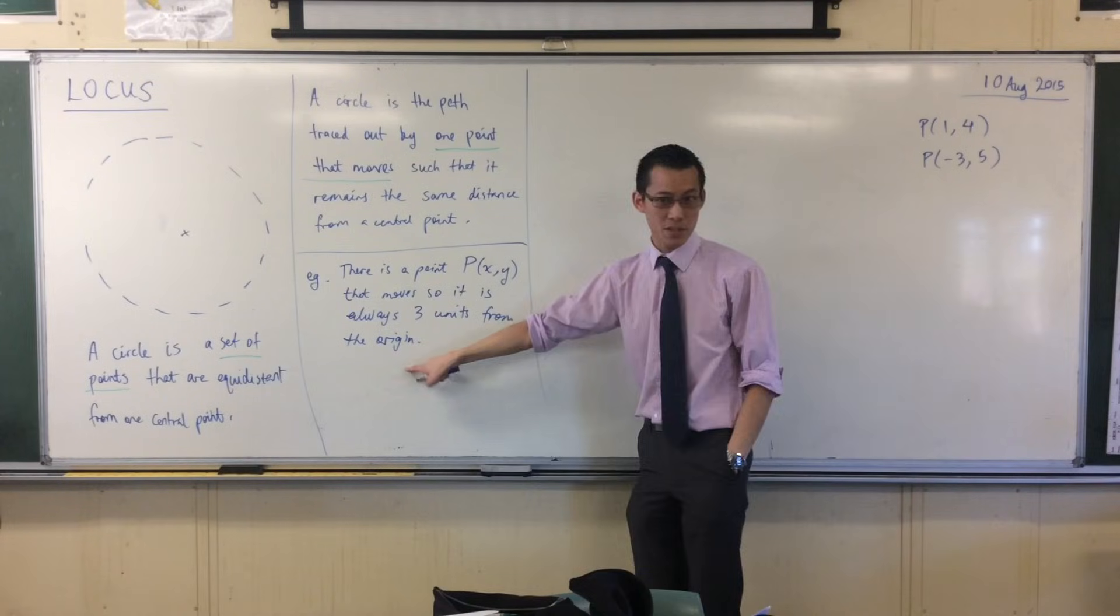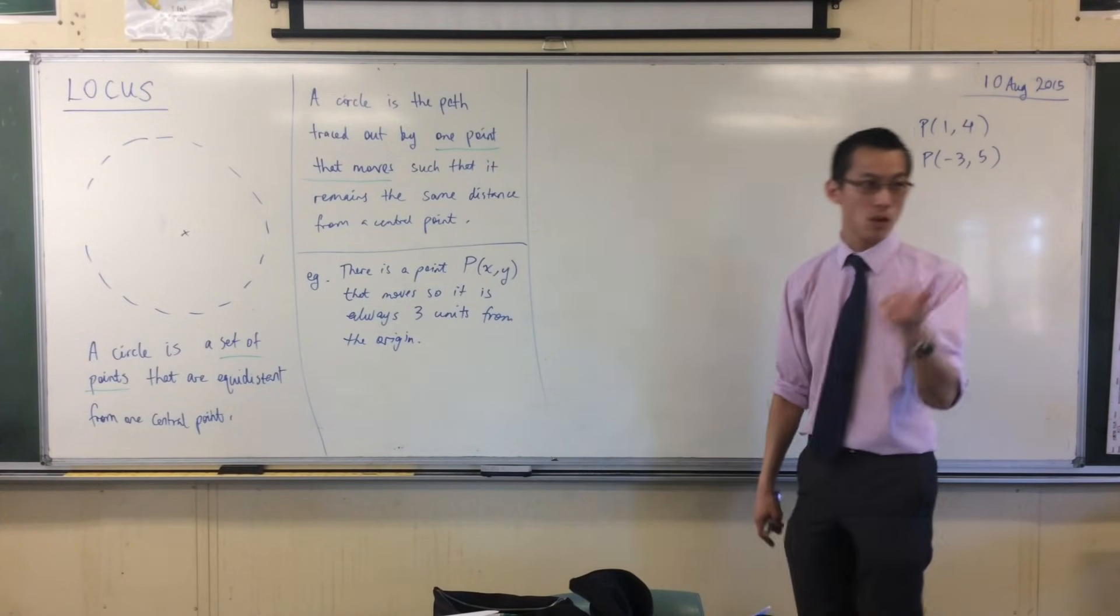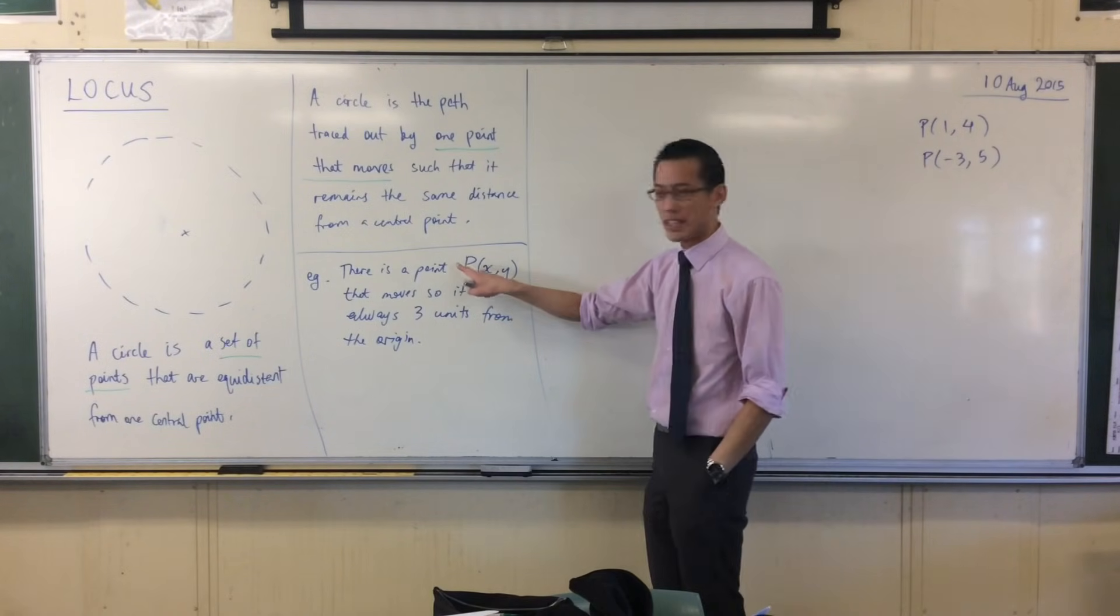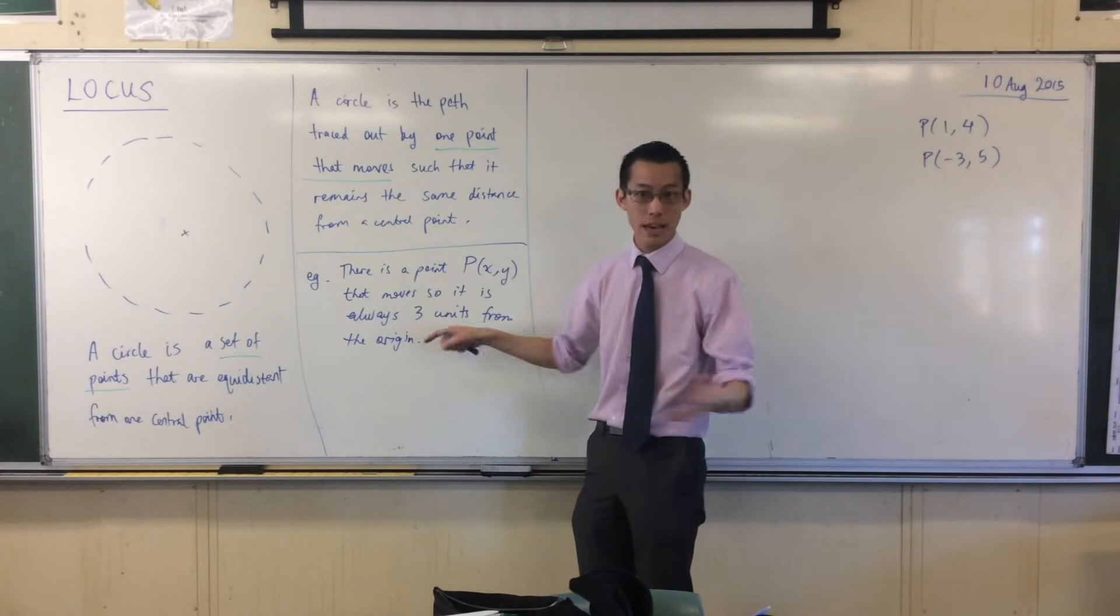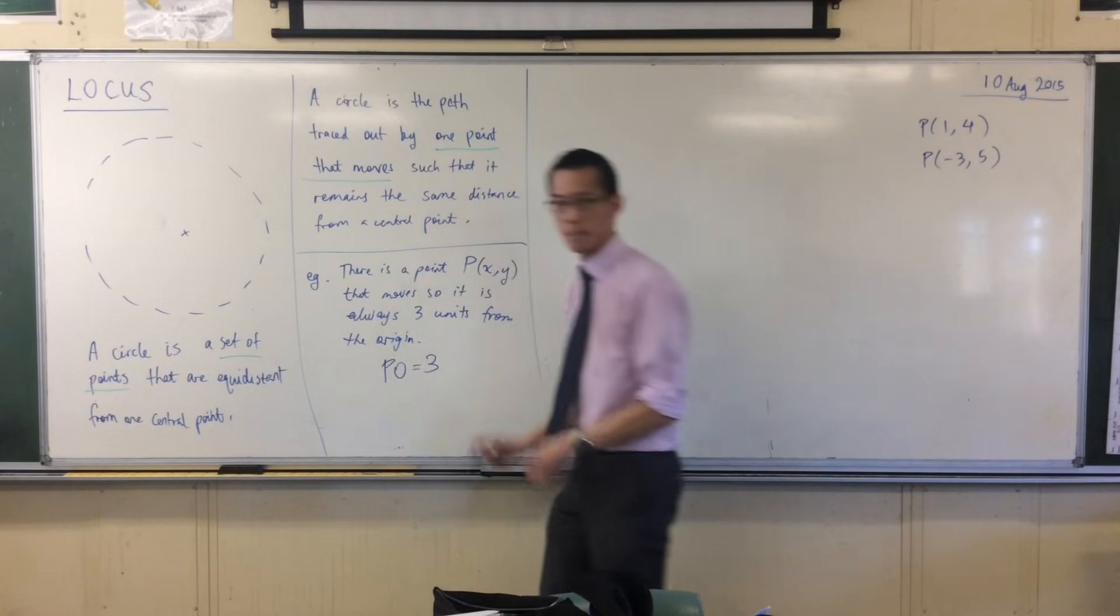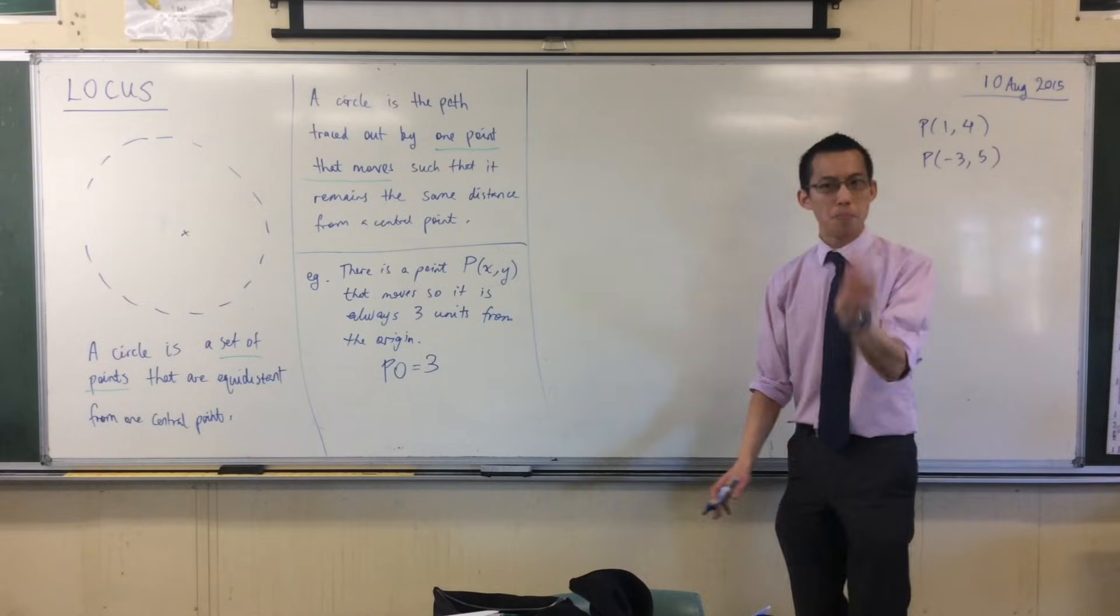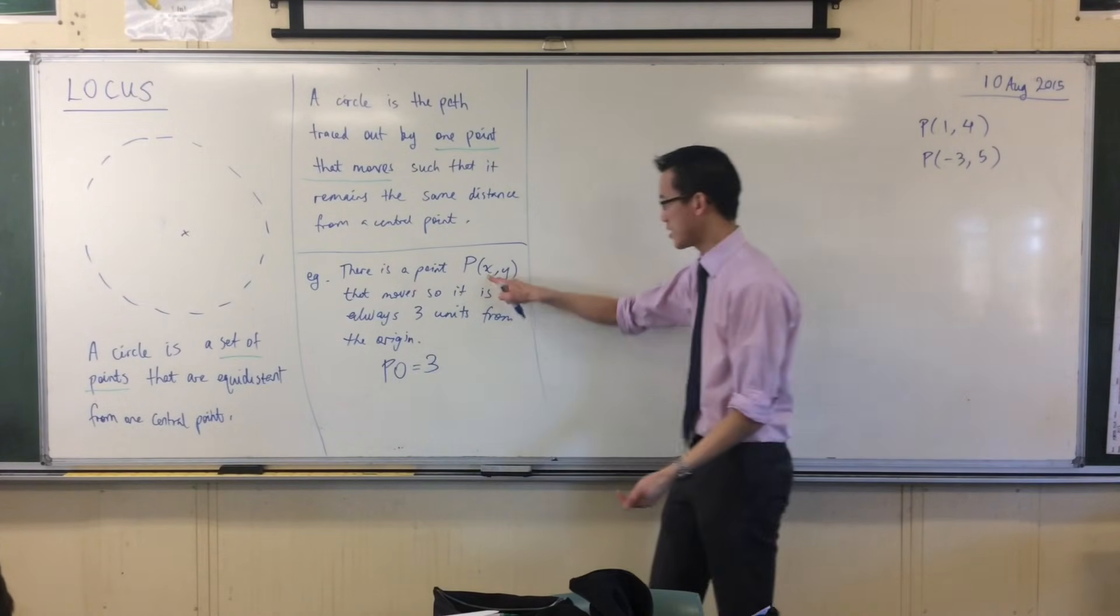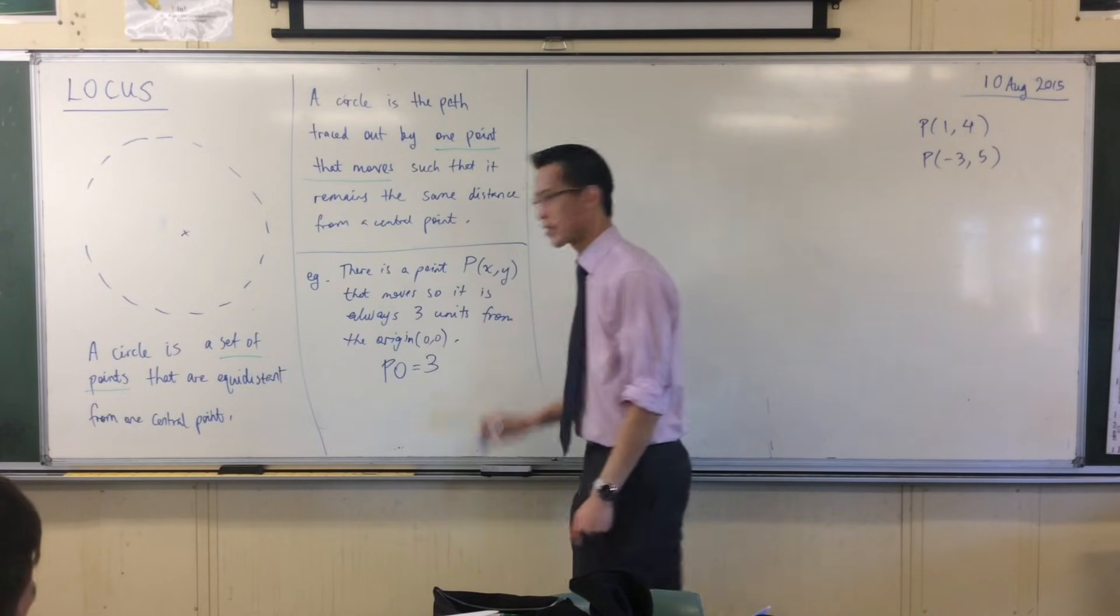It's from the origin—from the origin, what we usually conventionally call the origin, its coordinate is zero-zero, we tend to call it O for origin. So that means that the distance from P to O is three units. Do you agree with that? That's kind of what this is saying, but in symbolic form. PO equals three. That's what it is by definition. But I know how to find the distance between two points, don't I? If this is one of the points and the other point is this, I...